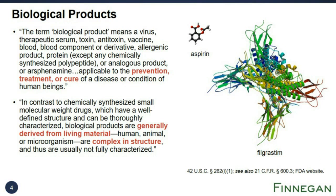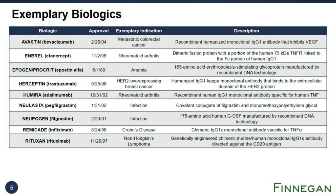Over 450 biologics have been approved to date, including the nine shown on this slide. Starting in 2003, biologics are approved and regulated by either the FDA's Center for Drug Evaluation and Research (CDER) or its Center for Biologic Evaluation and Research (CBER). We will be looking at these nine exemplary biologics as we discuss biosimilars, BIPCA litigations, and IPRs.